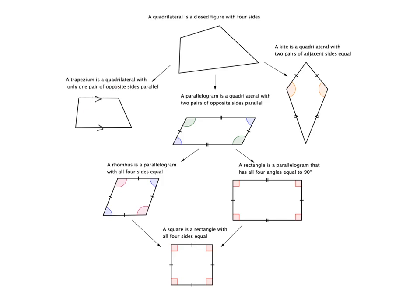Before moving on to the kite, let's get clear on opposite sides versus adjacent sides. 'Adjacent' in English means next to each other, and the same idea applies to adjacent sides — they are sides that are next to each other, and we can identify them easily because they join at a particular point, or to use the fancy word, a vertex.